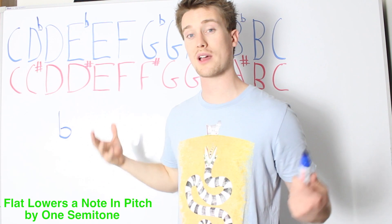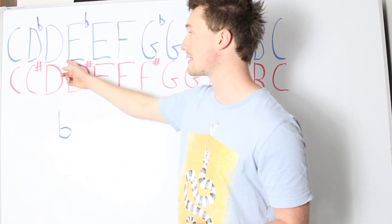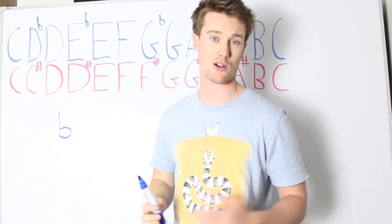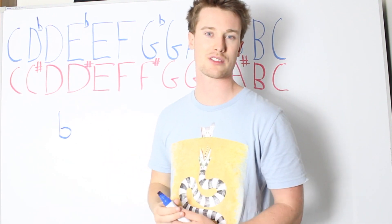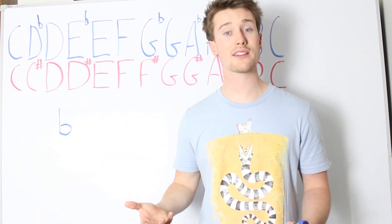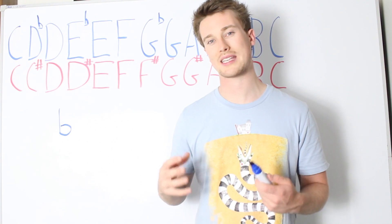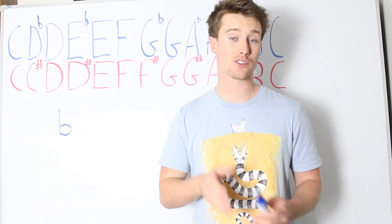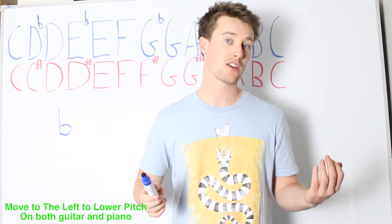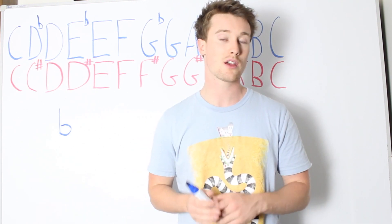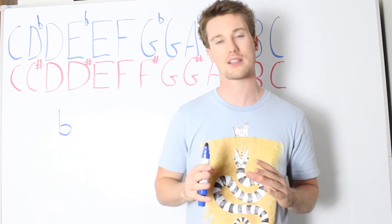When applying it to the guitar, if you're playing a D note but you want to play a D flat, you move to the left — closer to the headstock of the guitar — down a semitone to D flat. Or on the piano, if you're playing a D key and you want to flatten that note, you just move to the left one key, whether it's a black or a white key, and you flatten that note.